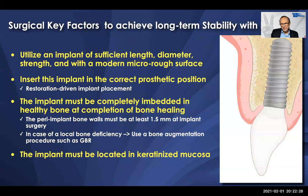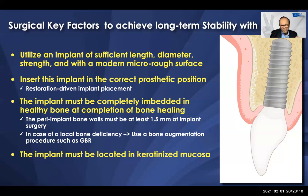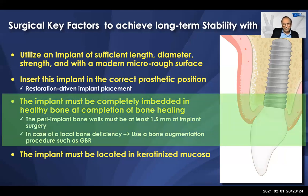From 35 years of clinical experience, to achieve long-term stability from a surgical standpoint, there are four key factors. First, use an implant of sufficient length, diameter, strength, and with a modern macro-rough surface. Second, place the implant in the right prosthetically driven position — restoration-driven implant placement. Third — extremely important — the implant must be completely and circumferentially embedded in bone at completion of bone healing, not just the day of surgery. Fourth, for long-term stability, the implant should be located in keratinized mucosa. The third point is critical when talking about GBR: when there is local bone deficiency, we often use a bone augmentation procedure, most often GBR.